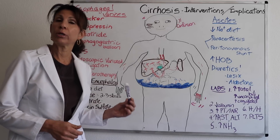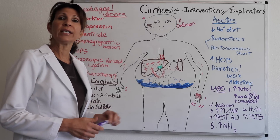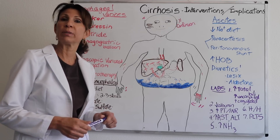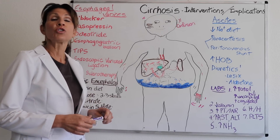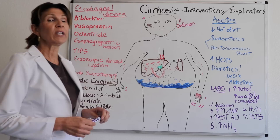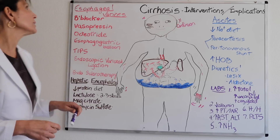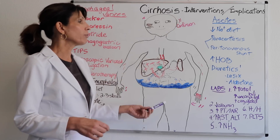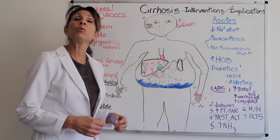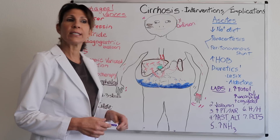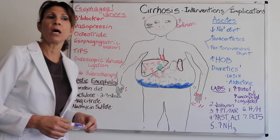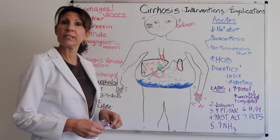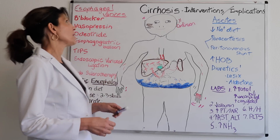Now we're going to look at the interventions or the nursing implications for somebody with cirrhosis — severe cirrhosis, end-stage liver disease. We're going to take a look at the three most serious implications of cirrhosis, the things that prompt hospitalization for these patients.